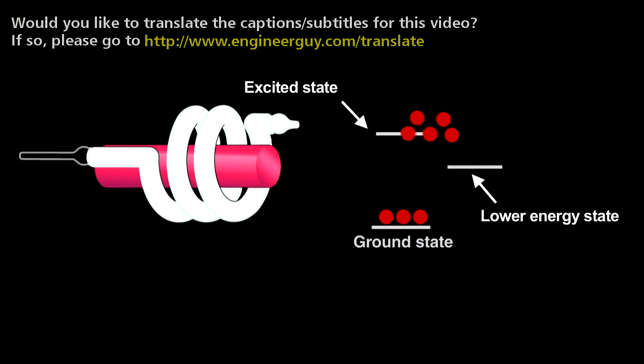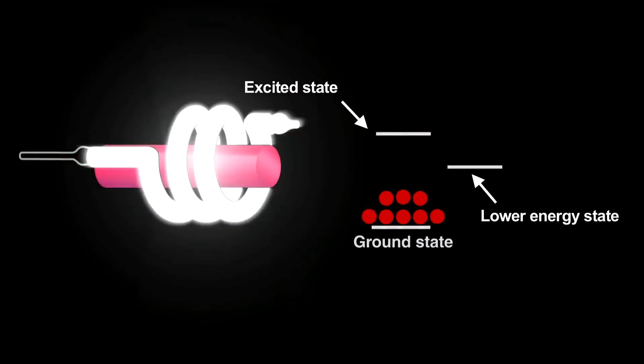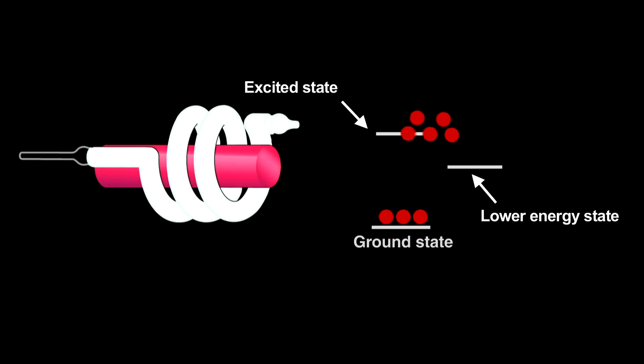Now, at this point we have coherent light, but not yet the other two properties of laser light. To get a narrow beam with all the light rays parallel and of a nearly single wavelength requires an addition to the ruby rod.